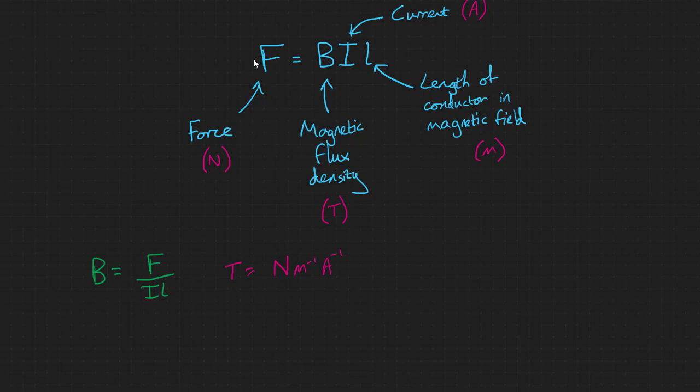This equation only applies if the wire is perpendicular to the magnetic field. If you needed to calculate the force of a wire that is not perpendicular to the magnetic field, you would use the equation F equals BIL sine theta.